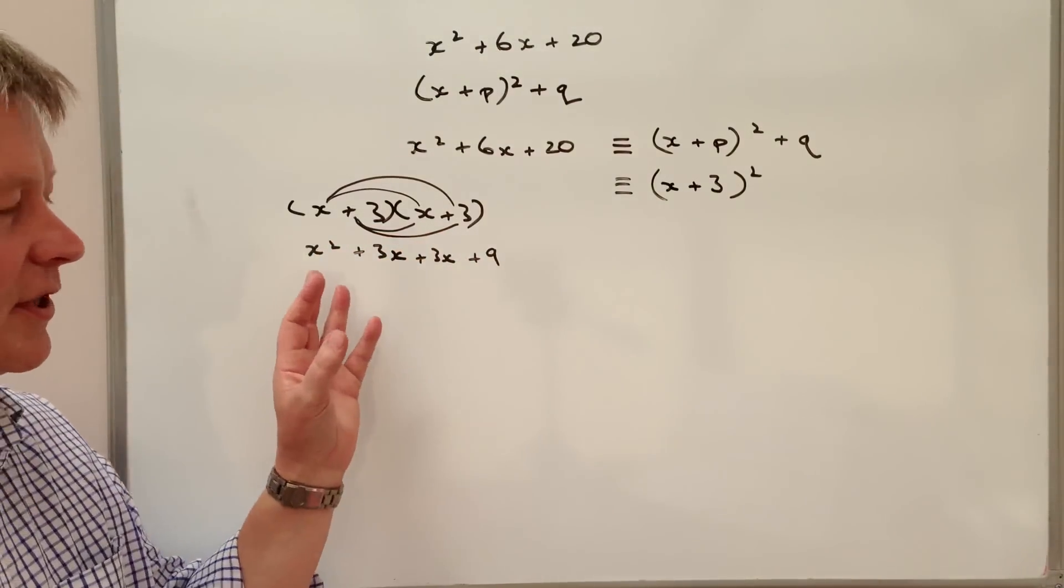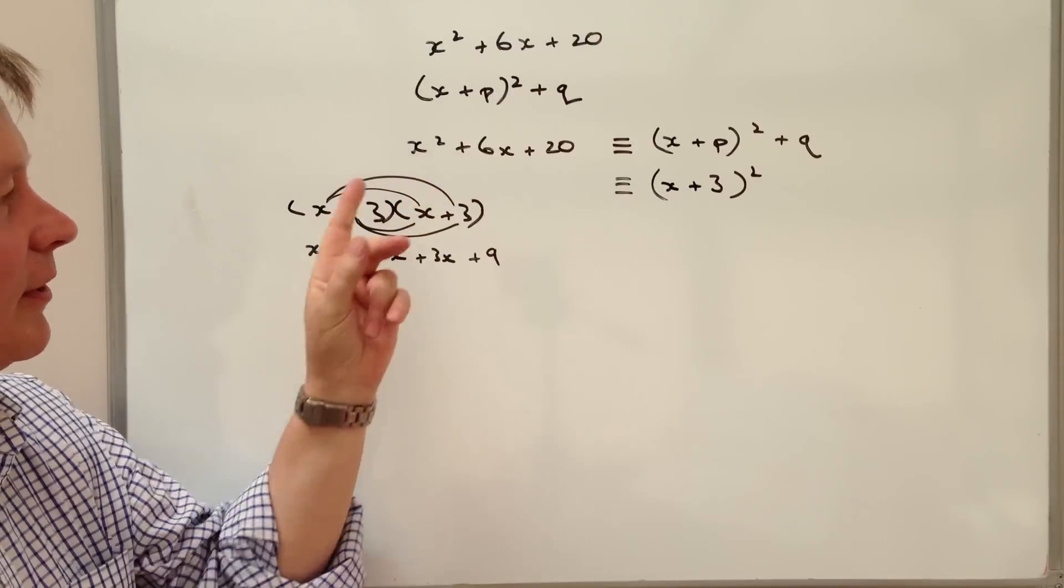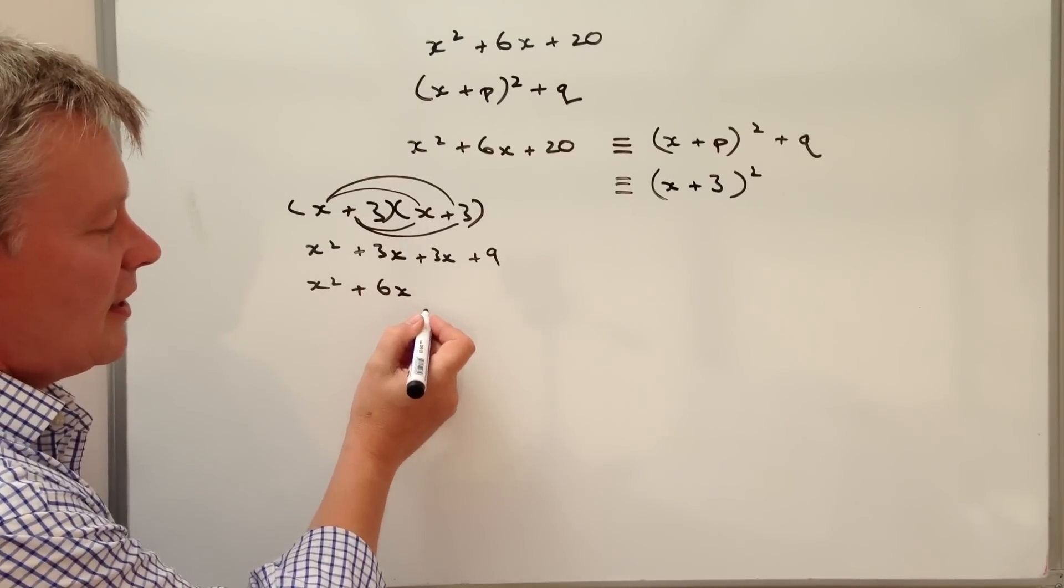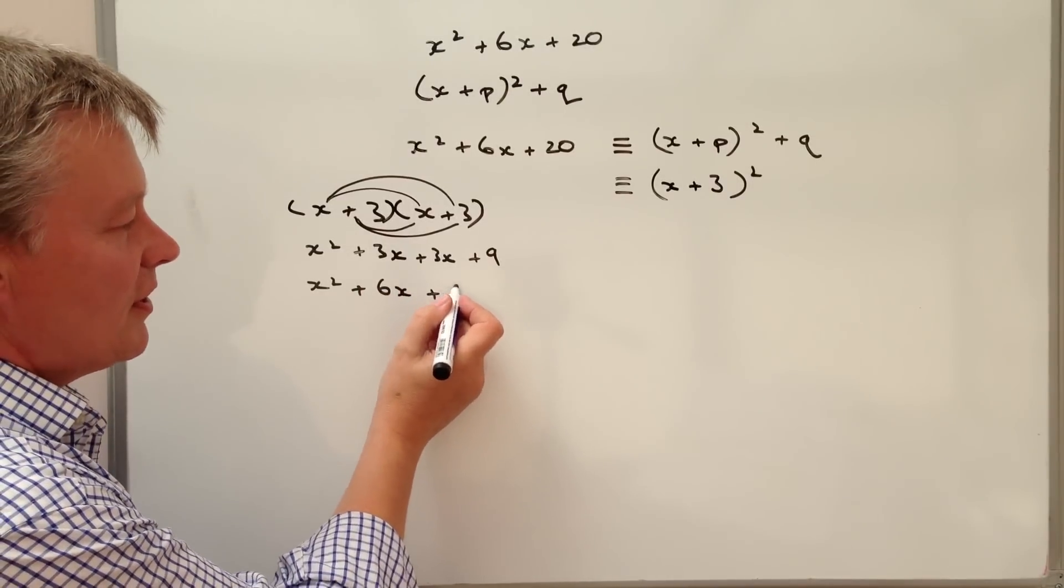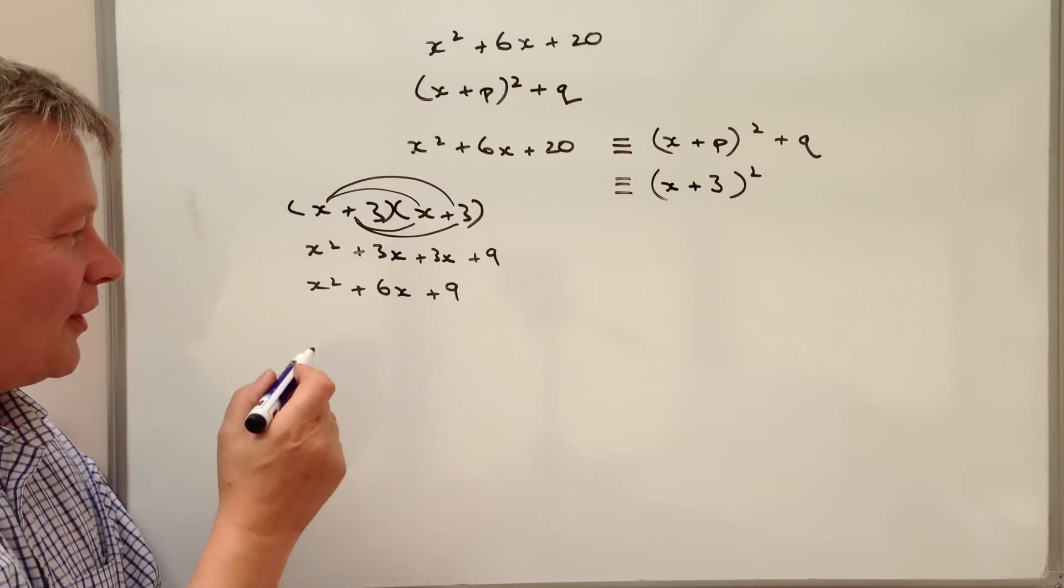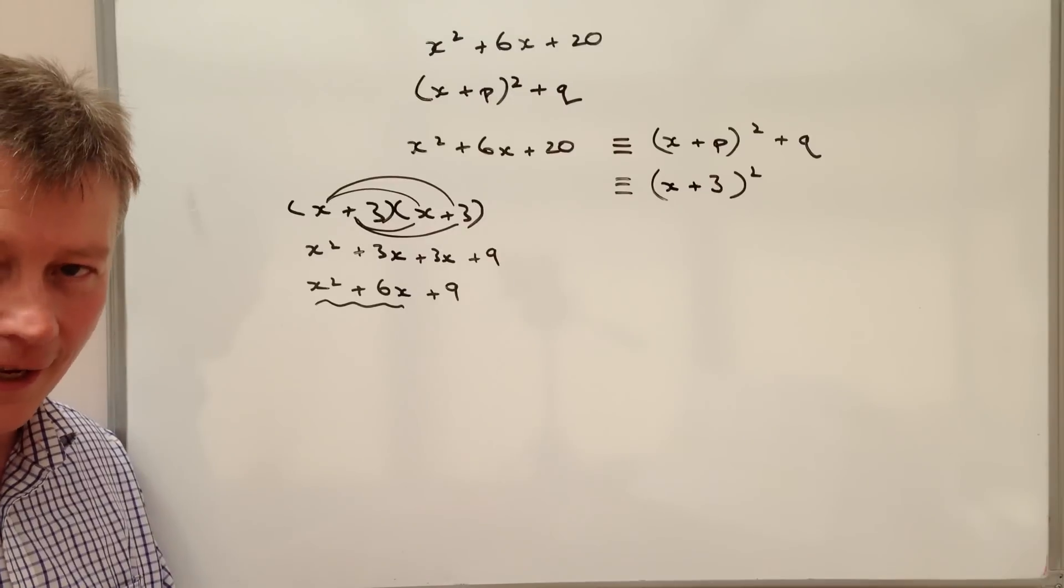So in other words I'm in a position where I've kind of partially got my x squared plus 6x because if I tidy that up I've got x squared plus 6x plus 9. Well that's a little bit tricky isn't it because I've kind of got part of it but I've got this positive 9 at the end.